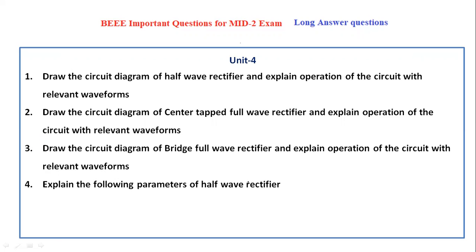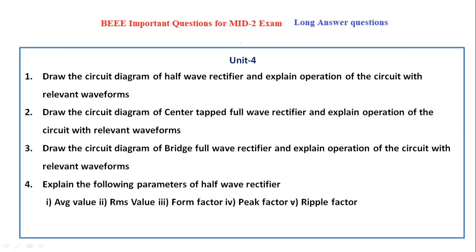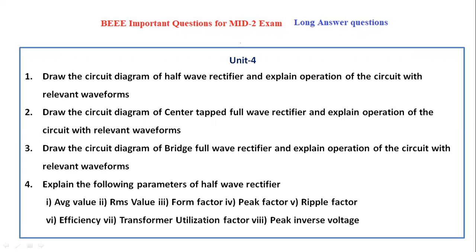Next, explain the following parameters of the half wave rectifier. If the question asks about parameters, you have to explain the average value, RMS value, form factor, peak factor, ripple factor, efficiency, transformer utilization factor, and peak inverse voltage — no need to draw the circuit diagram. However, if the question says explain the half wave rectifier with its parameters, then you must cover both waveforms and parameters. If the question separates them, explain only what is asked.